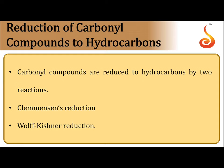Carbonyl compounds are reduced to hydrocarbons by two reactions: one is Clemmensen's reduction and the other is Wolff-Kishner reduction. Clemmensen's reduction involves reduction of an aldehyde or a ketone with zinc amalgam and concentrated HCl.